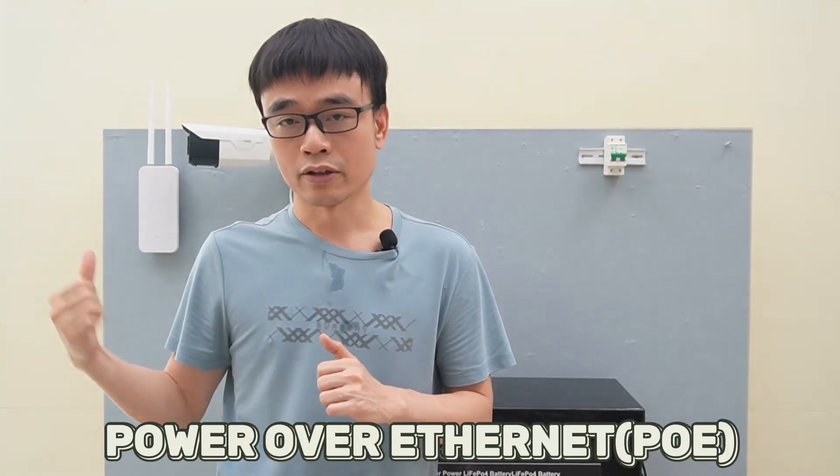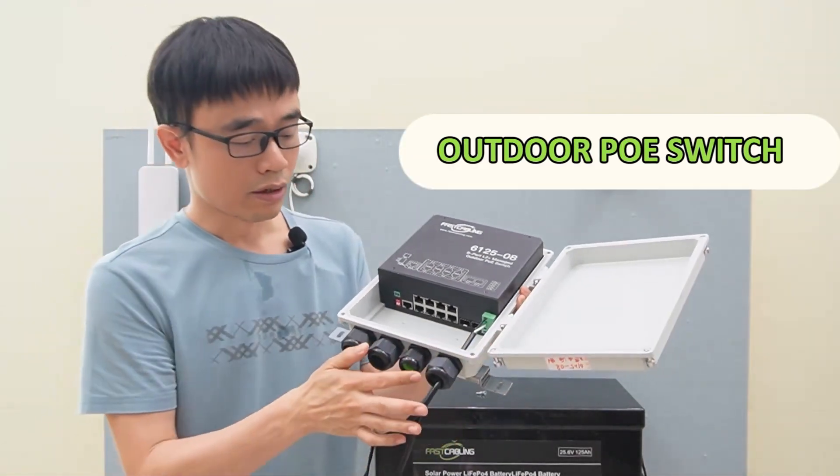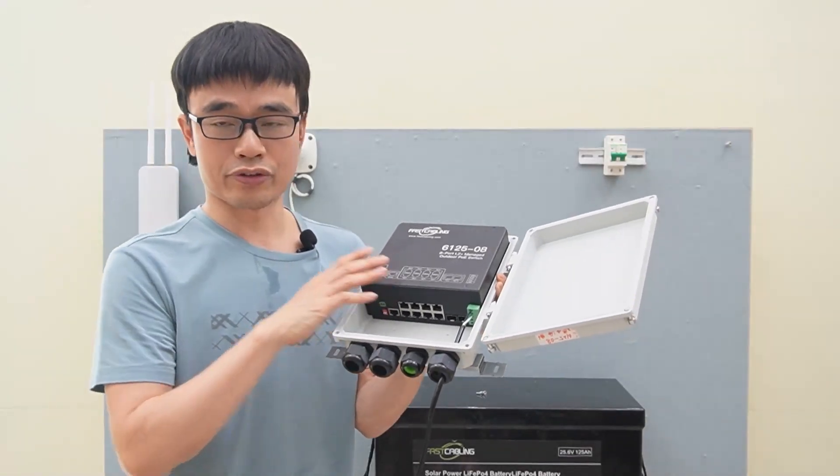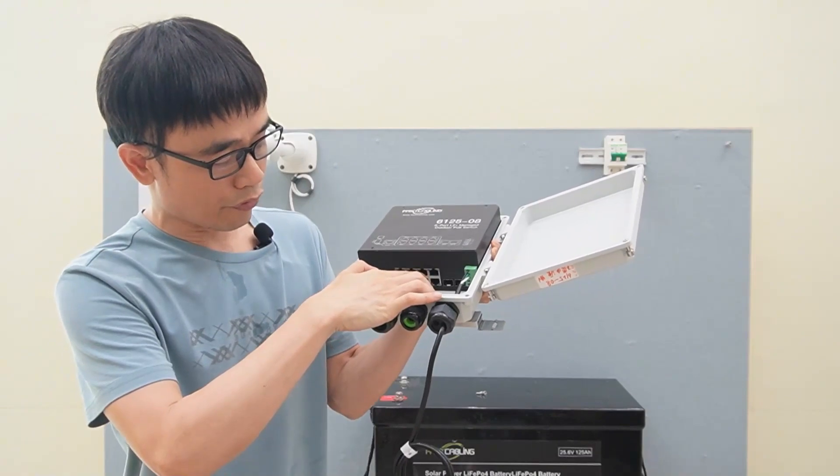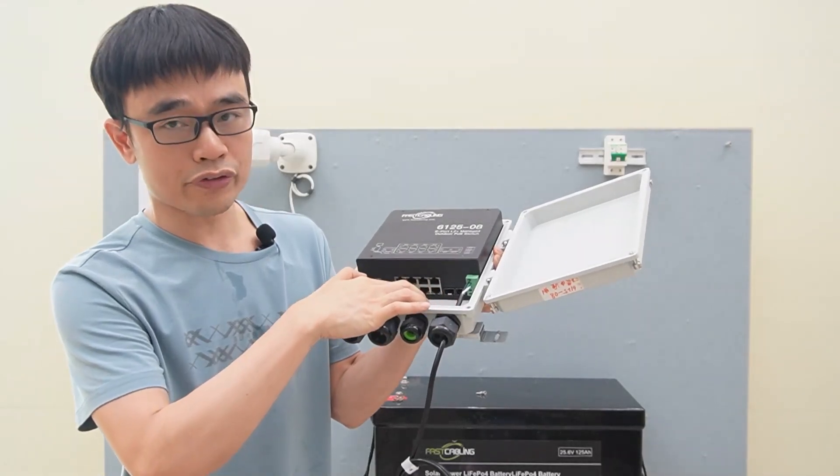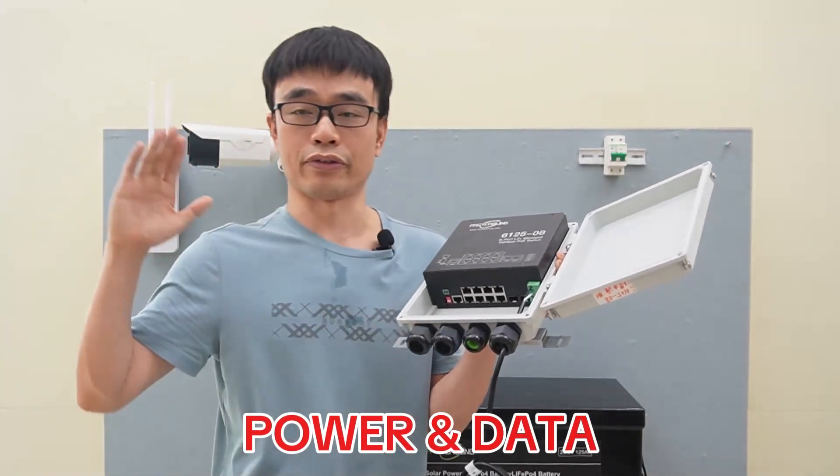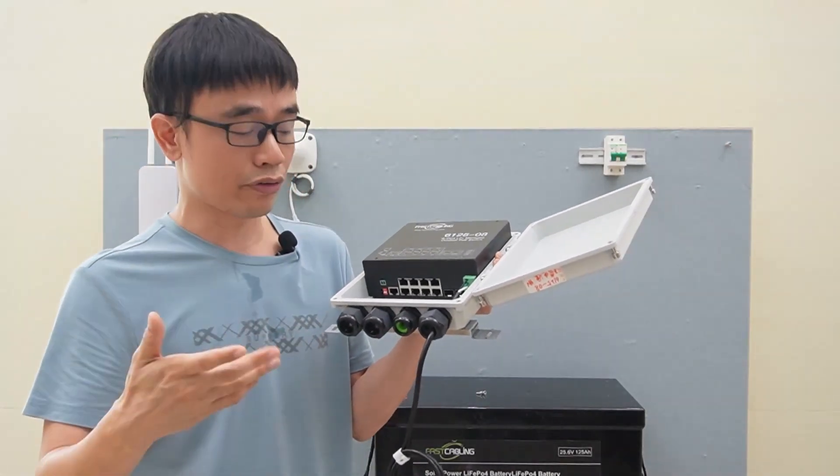We cannot connect this battery to these two devices directly. Both devices use PoE, so we need other equipment. This is the outdoor PoE switch. We are going to use this PoE switch to connect these two devices. There are eight PoE ports. You can connect the camera and access point to these PoE ports and provide power to these two devices. You can even connect more cameras, even IoT devices.